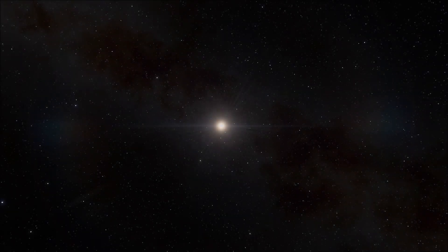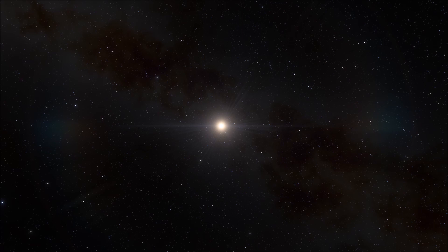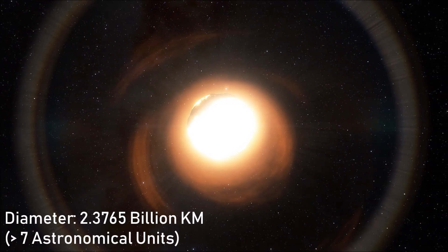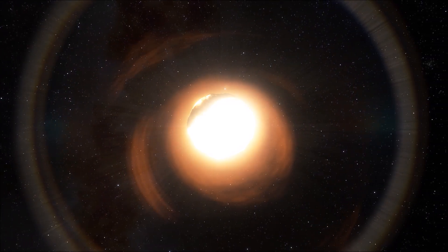UY Scuti is a red hypergiant pulsating variable star located roughly 5,100 light-years from the Earth in the constellation of Scutum. The star sits in a similar area of the sky to Sagittarius A, the giant black hole at the center of the Milky Way, in a fairly central galactic location. At just over seven astronomical units in diameter, this gives the star a radius of a massive 1,700 times that of our sun.